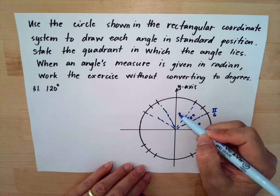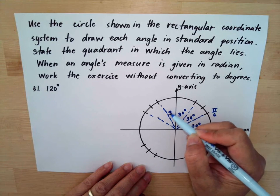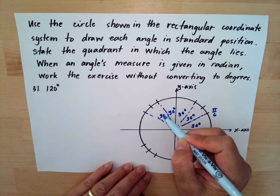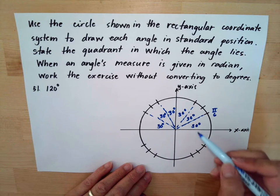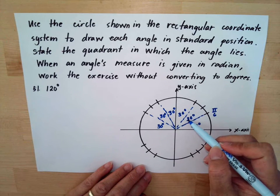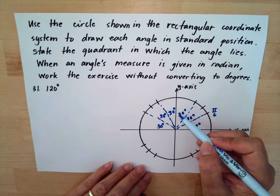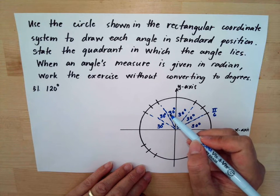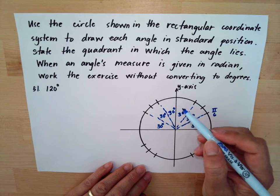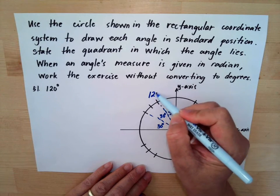You add another 30 degrees, and another 30 degrees. So we have 30 plus 30 is 60, 60 plus 30 is 90, 90 plus 30 is 120 degrees. So your 120 degrees is in this location.